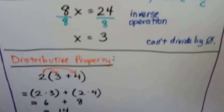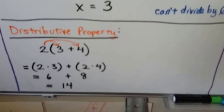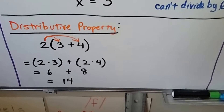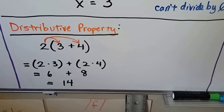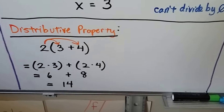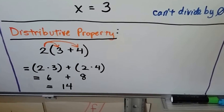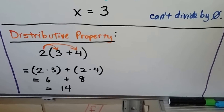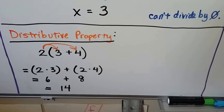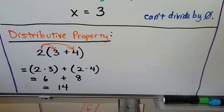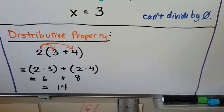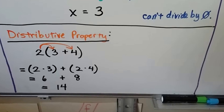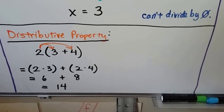And if you remember the distributive property — if we've got 2 times (3 plus 4), we can do 2 times 3 plus 2 times 4, giving us 6 plus 8, which equals 14. We just distribute that 2 to everything inside the parentheses.